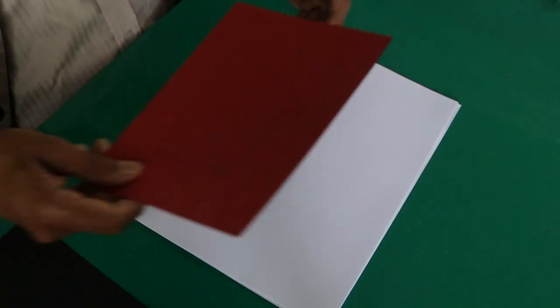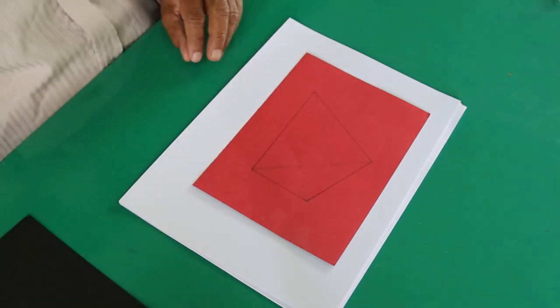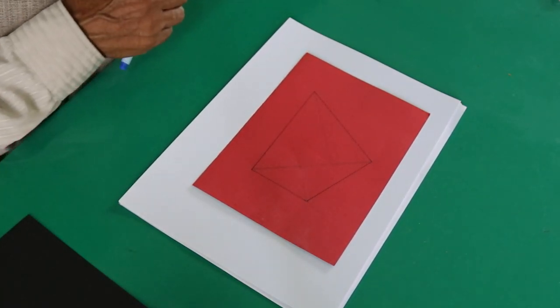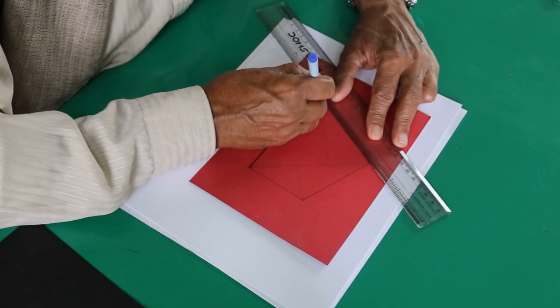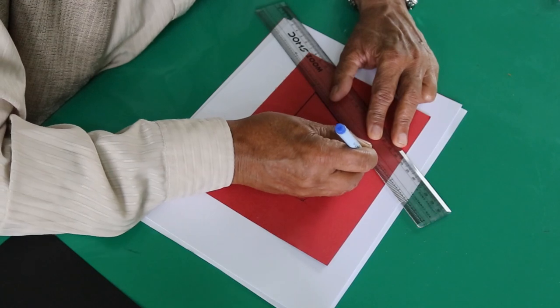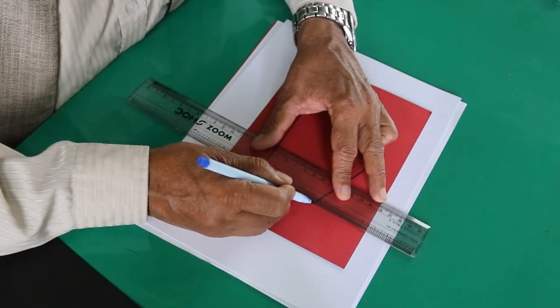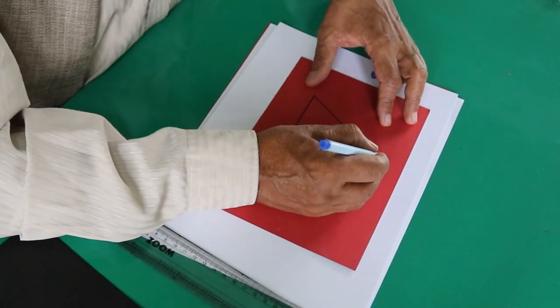Let's take a sheet of paper. In this sheet of paper, draw a quadrilateral ABCD. Name it ABCD.